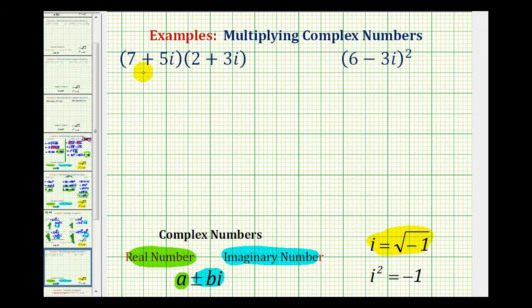So to find the product of seven plus five i and two plus three i, just as in multiplying binomials, we'll have four products.